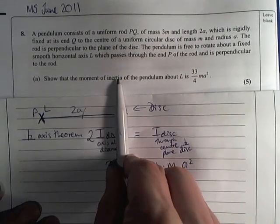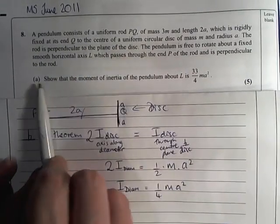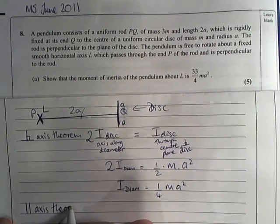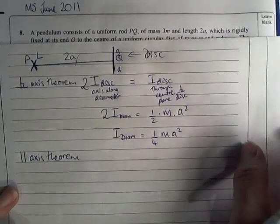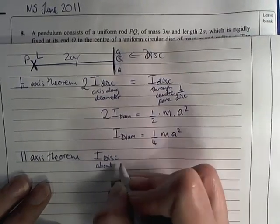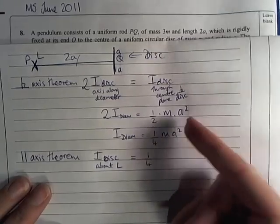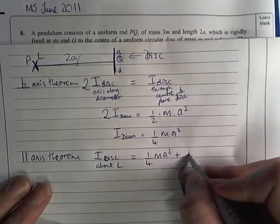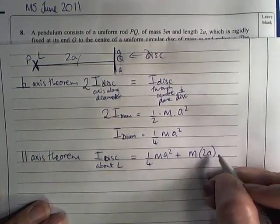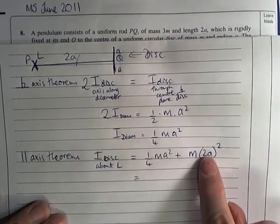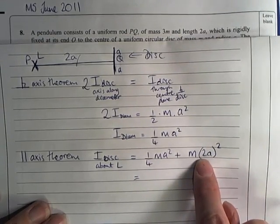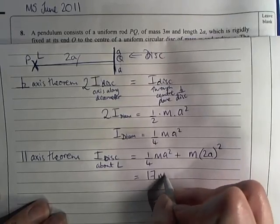Using the parallel axis theorem, I of the disk about L is going to be this plus the mass of the disk which is still m multiplied by the distance through which we're moving the axis squared. So here I end up with a quarter ma squared plus ma squared, so I end up with 17 ma squared over 4.